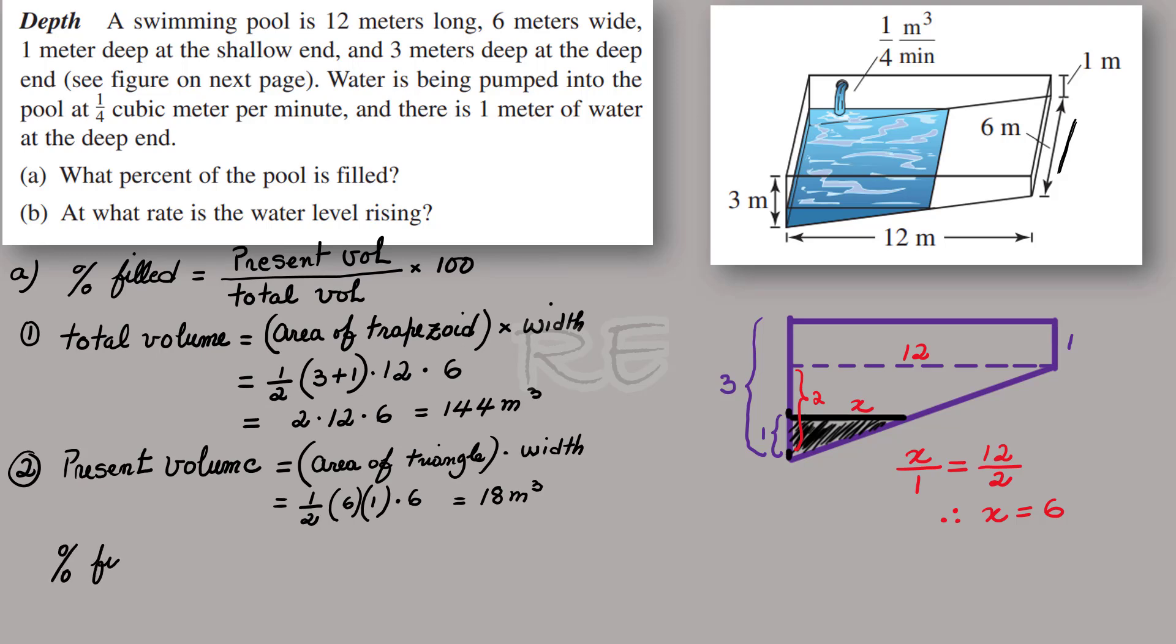Now the percent of the pool that is filled will be the present volume, 18, divided by 144. 18 cubic meters divided by 144 cubic meters, the total volume, multiplied by 100. And the answer is 12.5 percent.